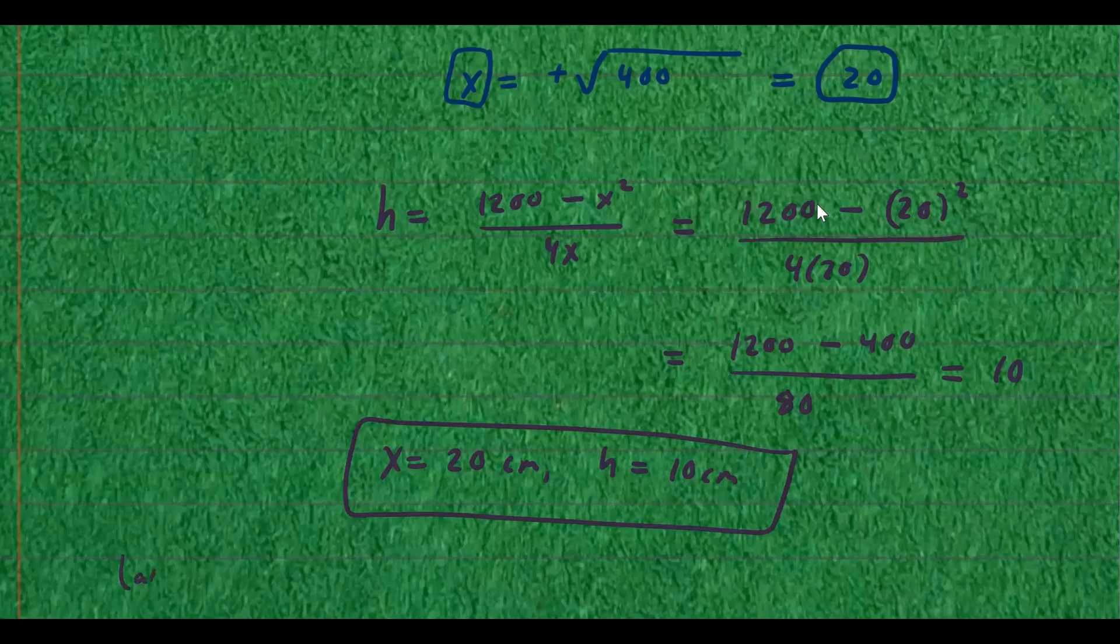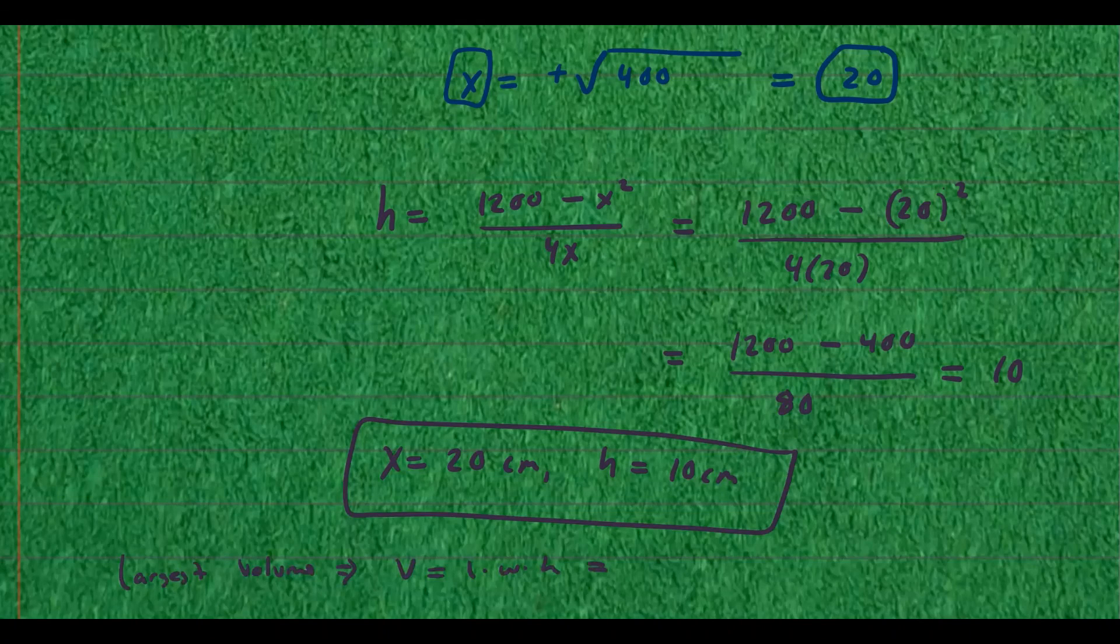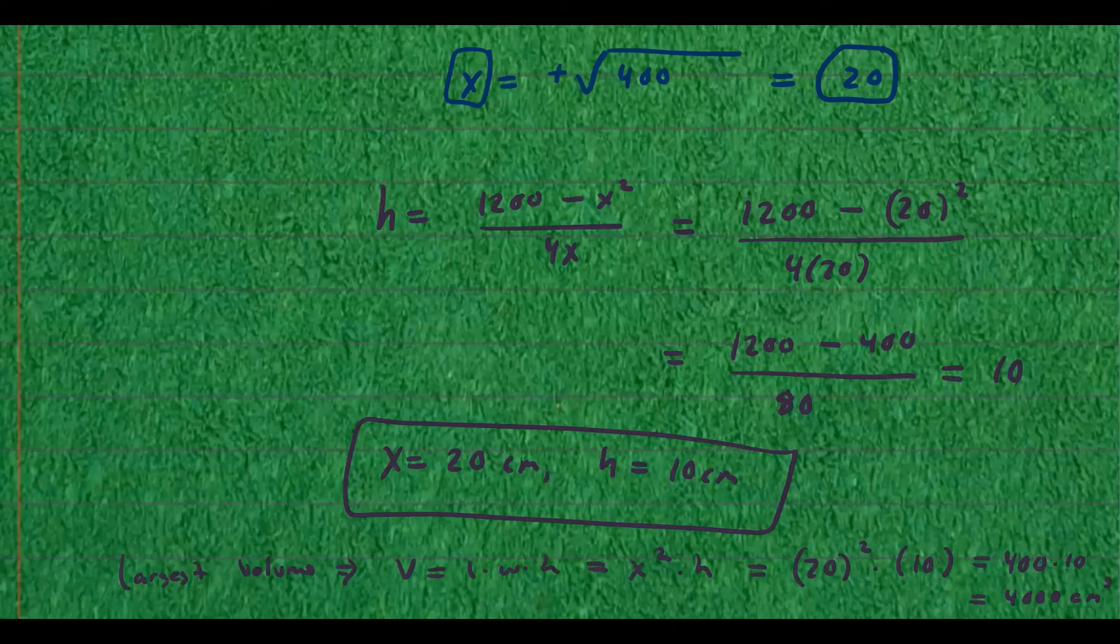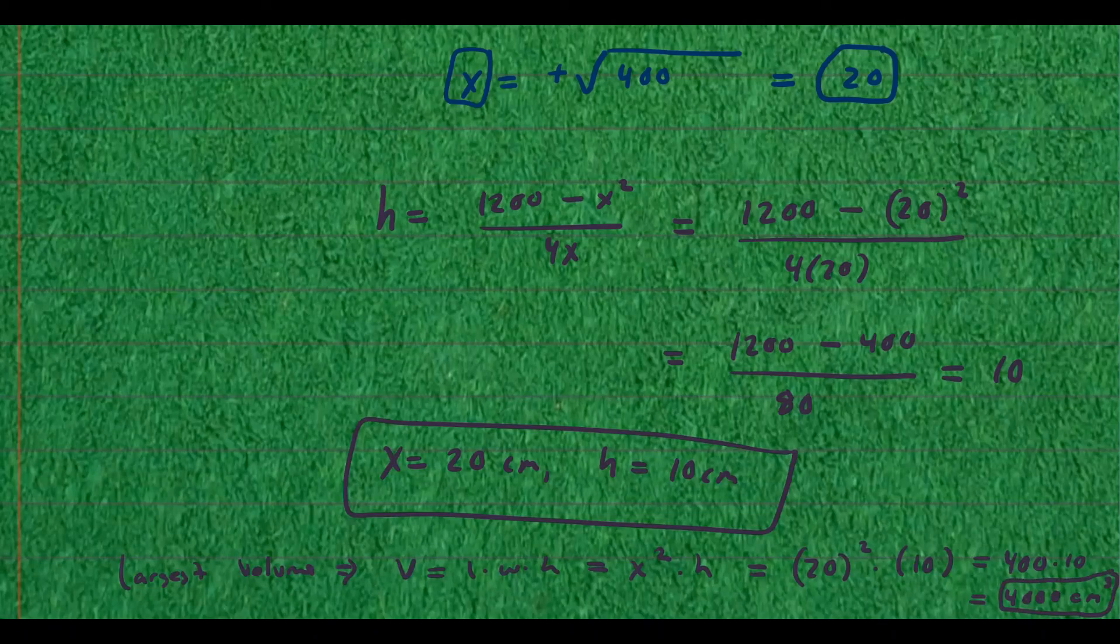So the largest volume is going to be v equals length times width times height. So we know those are x squared from before times height. So this is going to be x squared, that's 20 squared times the height, that's 10. So that's 400 times 10, which equals 4000 centimeters cubed. So that's the largest volume possible.